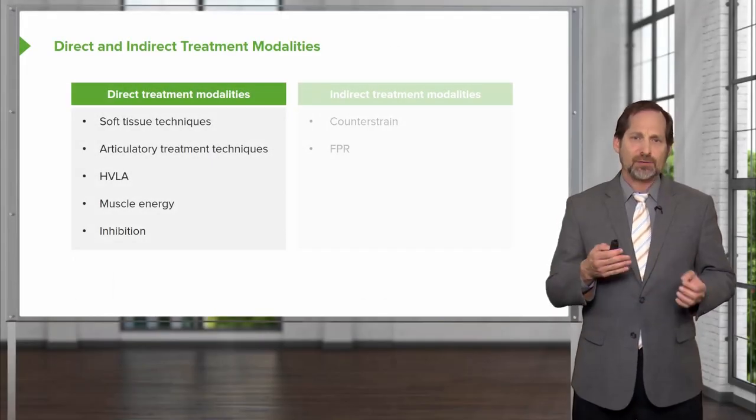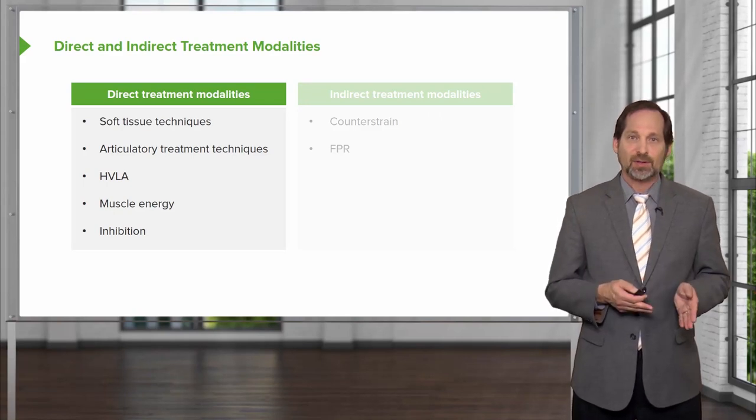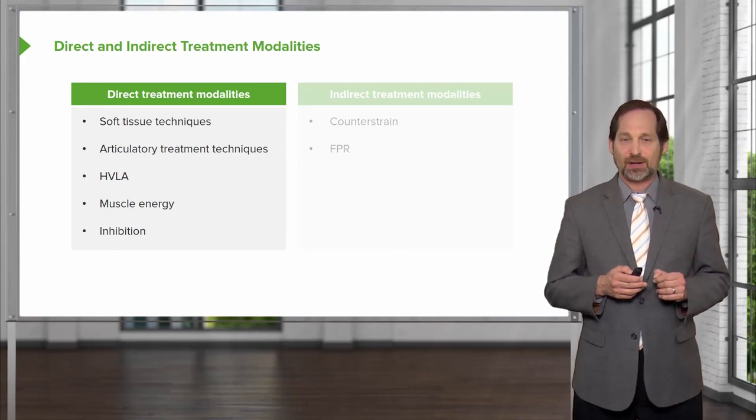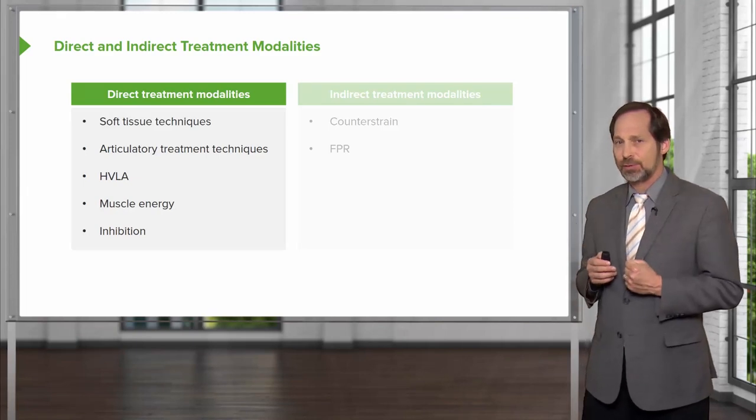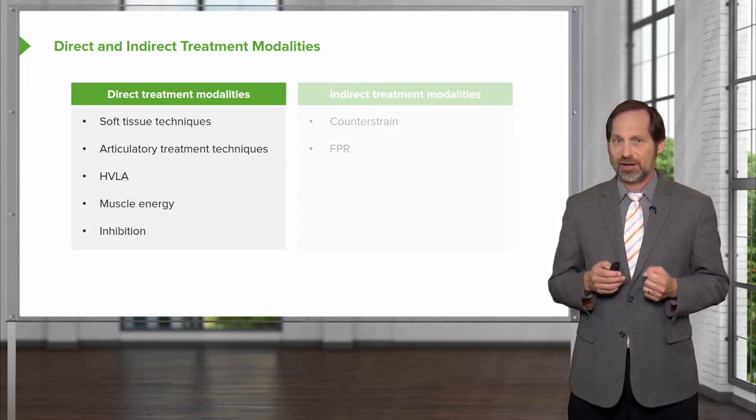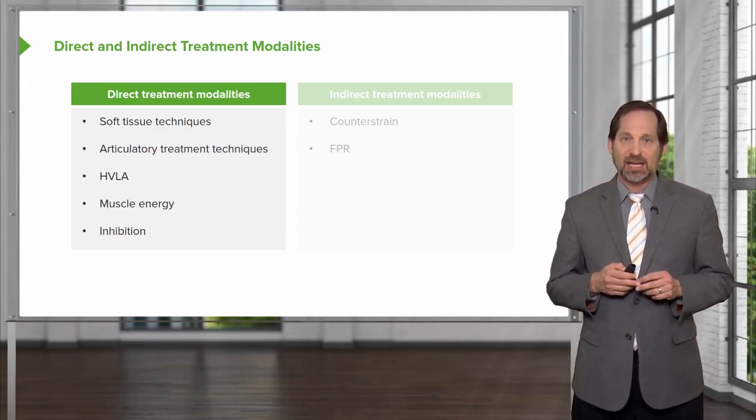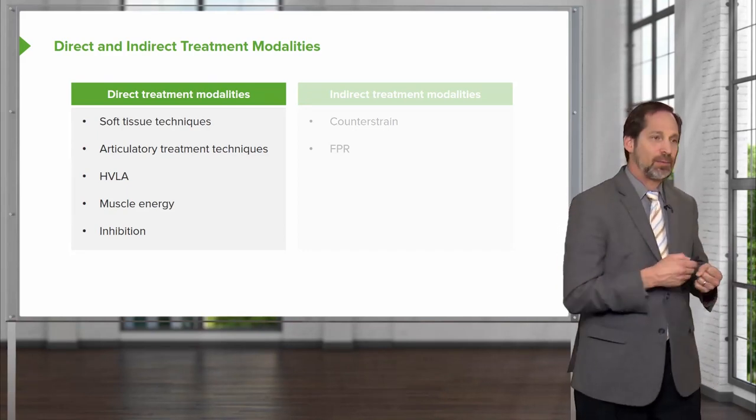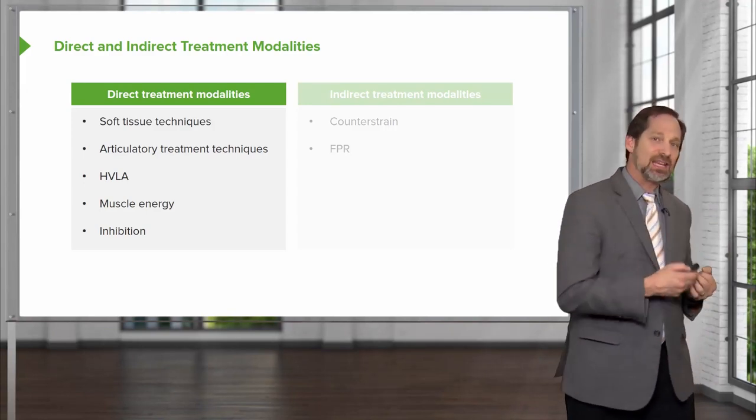When we divide up osteopathic manipulative treatments, we divide it into direct treatments and indirect treatments. A direct treatment is if a person can't rotate right, the treatment is going to rotate them right and do something to get them to rotate right better. It's going to free up the motion in the area of restriction, the area that it can't go. An indirect technique is if you can't turn right, let's turn you left and pull your muscles until you can move more to the right.